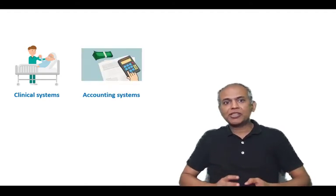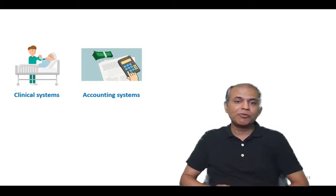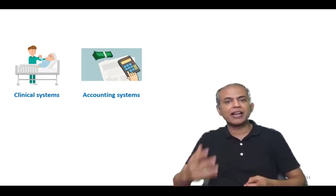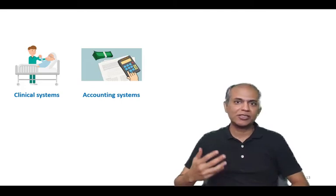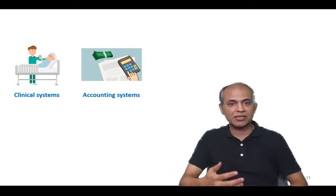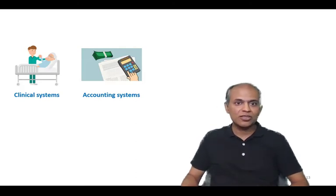There is another system, the accounting information, which takes data, some data from this clinical system and the kind of operations or surgeries performed on patients and bills the patients for them and adds the insurance codes.